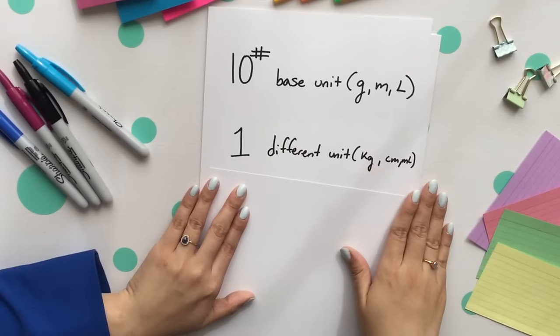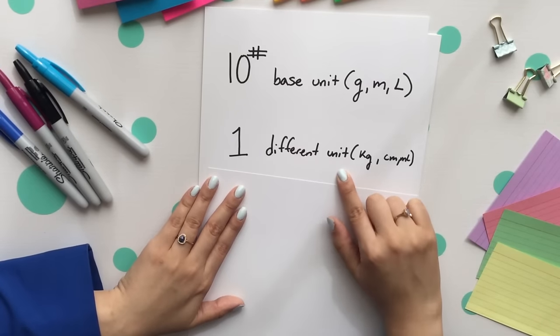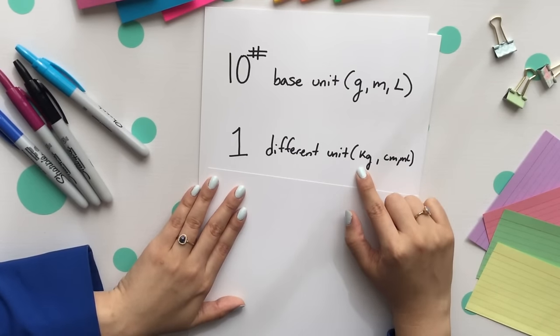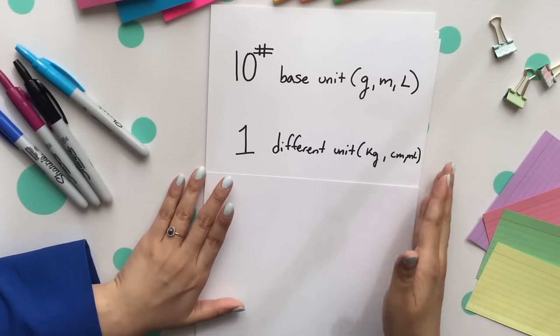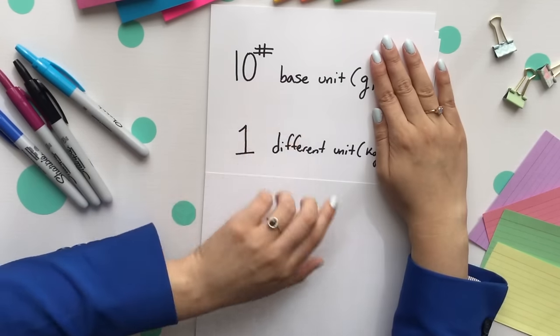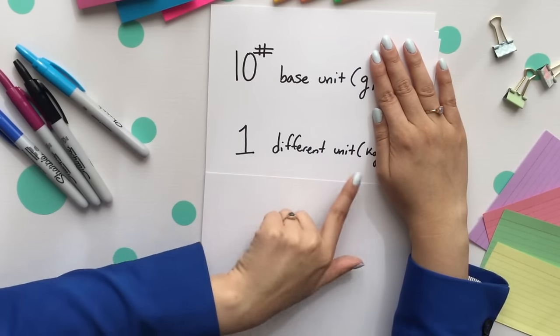Next, you want to place the one with the different unit. By different unit, I mean kilograms, centimeters, and milliliters. The other different factor that we can see is that the base unit only has one letter, the different unit has two letters.